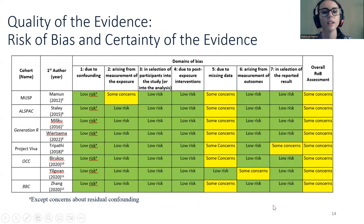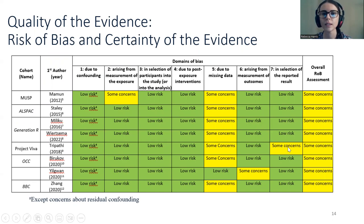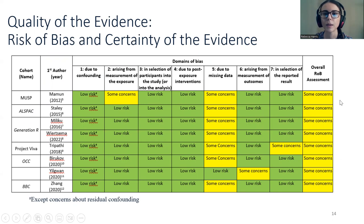Here are the results from our risk of bias assessment. Overall, there was a low risk of bias in most domains, but there were some concerns due to missing data, mostly due to the long follow-up of the cohorts. This led to all studies being rated as 'some concerns' overall.